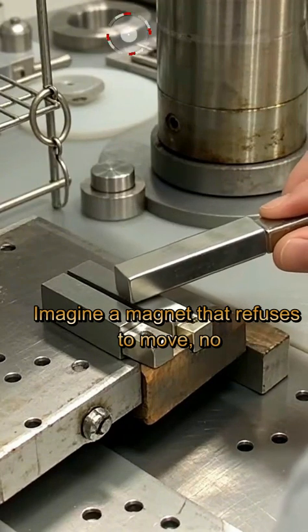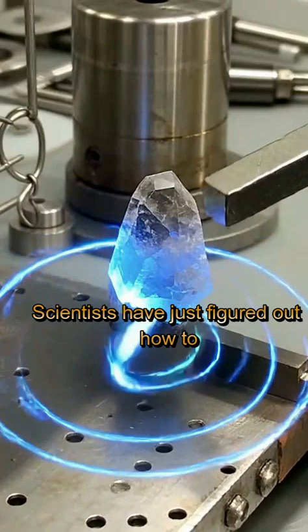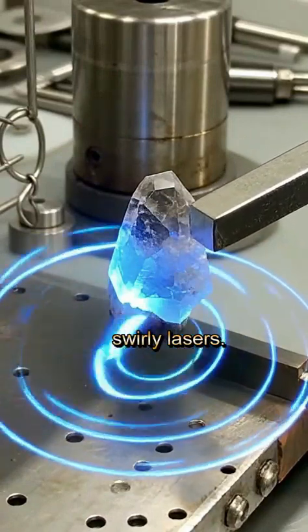Imagine a magnet that refuses to move, no matter how strong a magnetic field you throw at it. Scientists have just figured out how to control this mysterious behavior using swirly lasers.